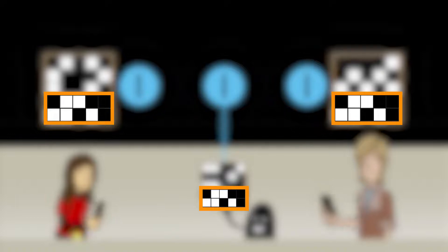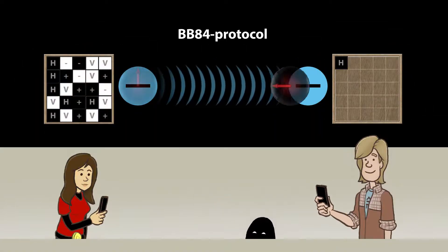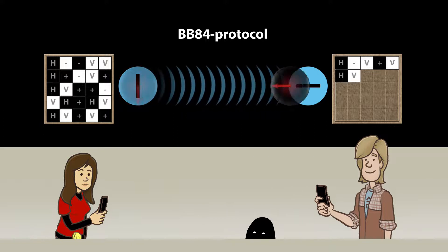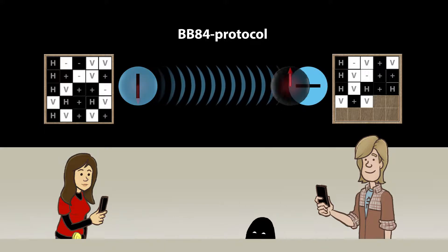Alice and Bob can, however, prevent that using the so-called BB84 protocol, which we are now going to explain in more detail. Alice would like to send her key to Bob. For that purpose, she sometimes transmits photons polarized in the horizontal-vertical base, sometimes in the plus-minus base. Bob is likewise constantly randomly changing the measuring base, without knowing the base used by Alice.